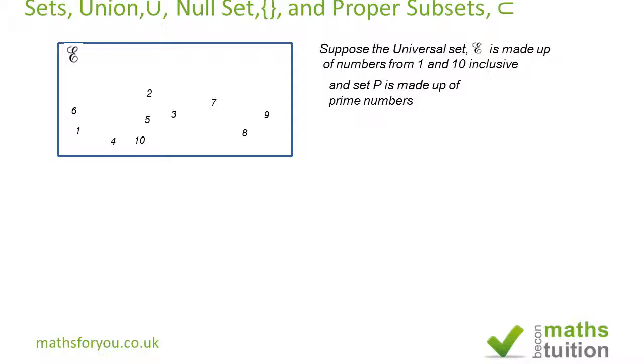We're told that P is made up of prime numbers, so we expect P to contain the numbers 2, 5, 3, and 7. Note that P does not contain all the elements in the universal set, so P has fewer numbers than in the universal set. Therefore, P is a proper subset of the universal set.